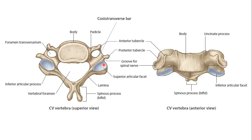Now the vertebral arch: first the pedicle, which projects backwards and laterally, then the lamina — two parts. We then have the superior articular process and the inferior articular process. The superior articular facet articulates with the vertebra above and is flat, elongated, directed backwards and upwards. The inferior articular facet articulates with the vertebra below and is also flat, directed downwards and backwards.